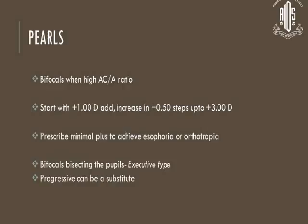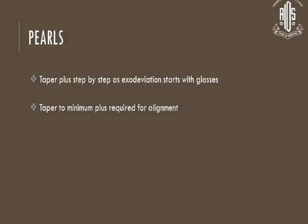Bifocals must bisect the pupils. Off late, we have been giving progressive glasses. Even executive bifocal blanks are not available anymore — I have changed to progressive. It is expensive, but people have stopped using executive bifocals even for adults, so the blanks are not available and everyone has gone to progressive glasses. Taper the plus step by step as exodeviation starts with the glasses — this is for high AC/A ratio. For near, just start tapering, and once it becomes ortho or minimally so, prescribe those glasses. Sometimes we even change the glasses after a month, depending on the case.